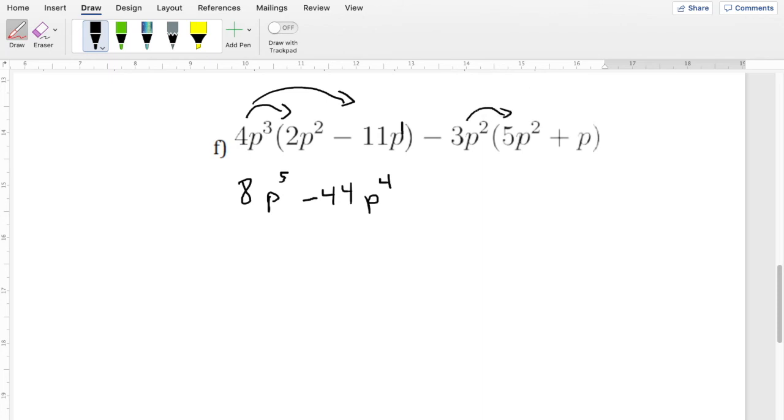Then we'll distribute over here. This is minus 3 times 5 is 15. 2 plus 2 is 4. Negative 1. 1 times negative 3 is minus 3. There's a 1 up here. That's going to be p cubed. Now with this one, we only have one set of like terms. Just these guys.